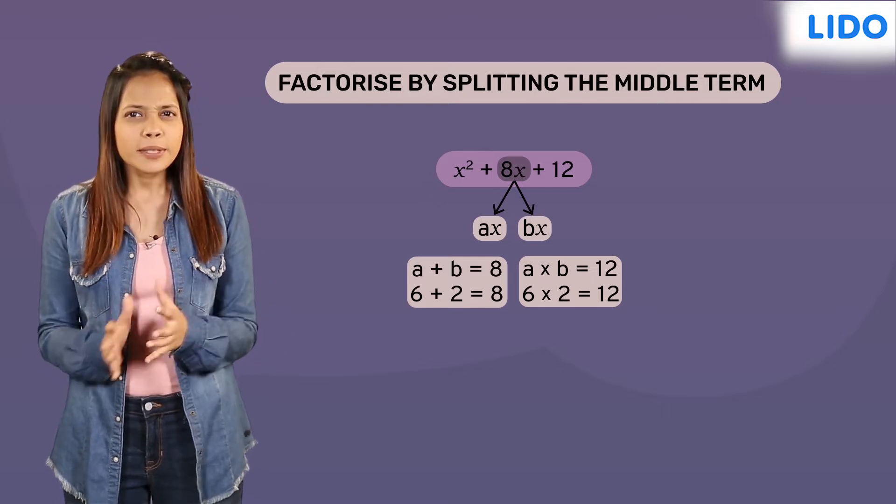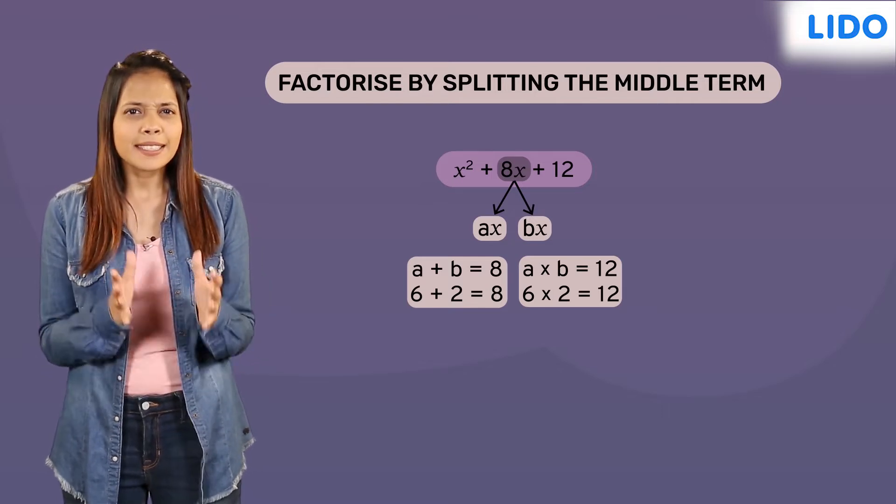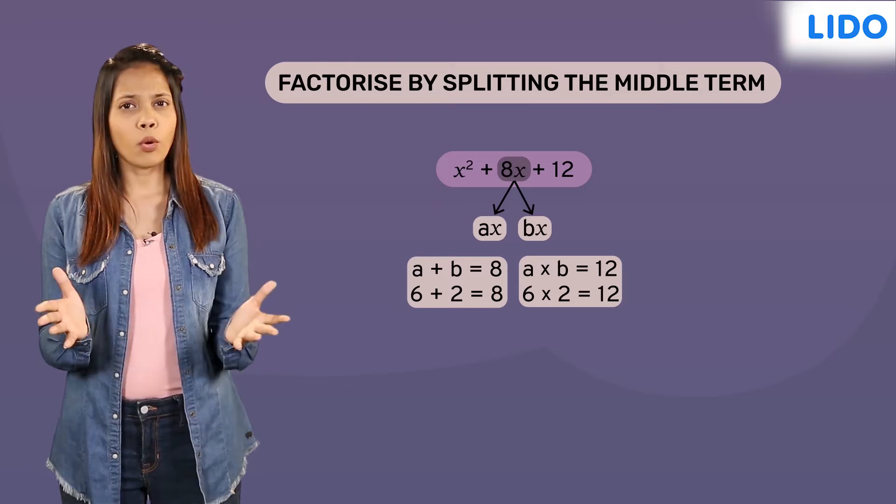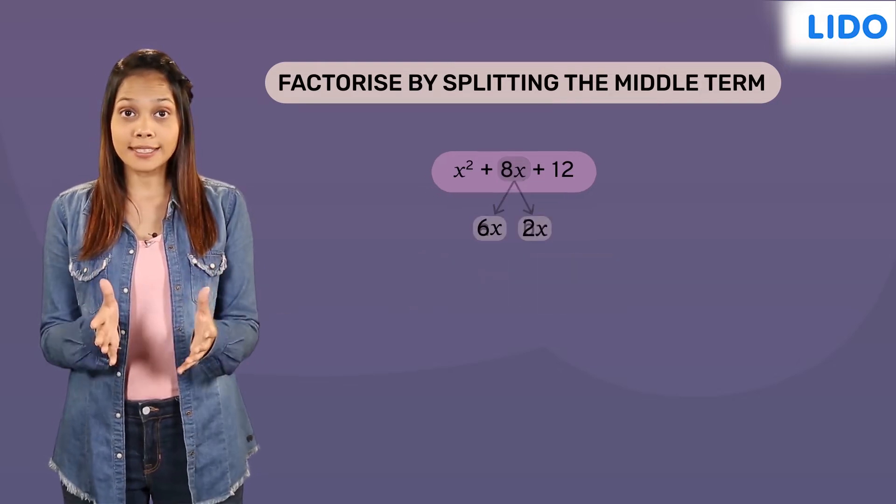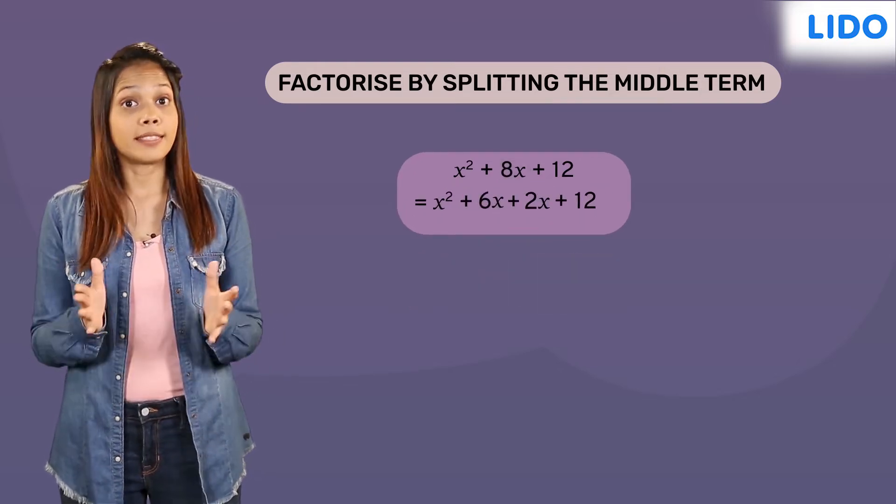Next, we will use these numbers to write the middle term as a sum of two terms. So, 8x can be written as 6x plus 2x.